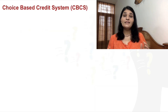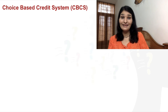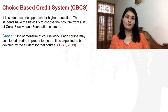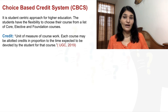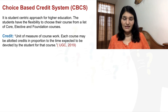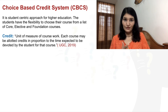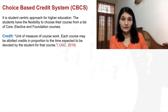Choice Based Credit System — CBCS — is a very important topic for UGC NET because the National Education Policy emphasizes a multi-disciplinary approach, which fits this pattern well. It is being followed in many higher institutions like IITs and IIMs, and is being considered for university and college level too. It is a student-centric approach where students have the flexibility to choose their courses from a list of core, elective, and foundation courses. Credit is a unit of measure of coursework allotted in proportion to the time students are expected to devote to a course.